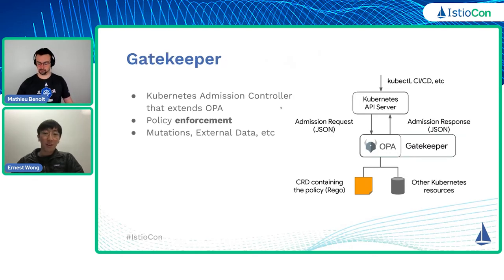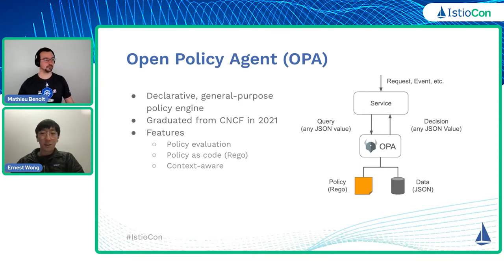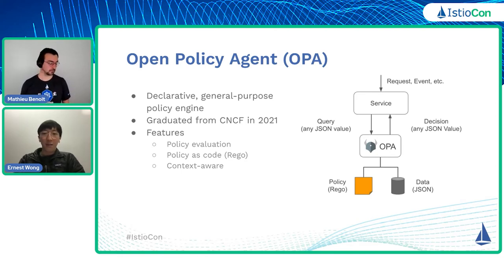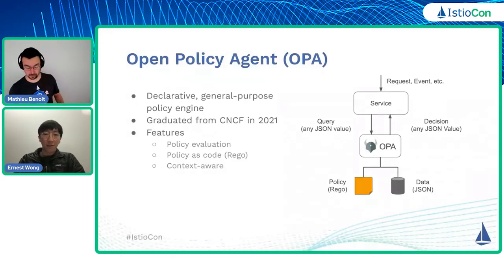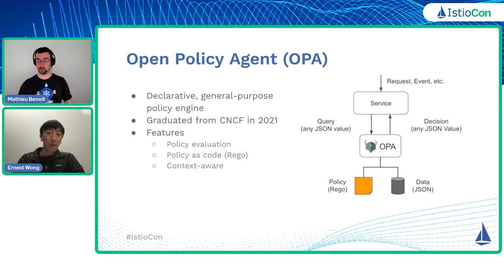Open Policy Agent, or OPA, is a declarative general purpose policy engine where services can offload their policy decisions. With OPA, instead of embedding policies within individual microservices, developers can write standalone policies and let OPA make policy decisions. The project graduated from CNCF in 2021, so it's part of the cloud-native ecosystem. It is battle-tested by companies like Google and Microsoft. OPA provides a well-defined policy language called Rego, which allows system administrators and developers to make visible incremental changes to your organization's policies. It is also context-aware, meaning it will work in any environment from the cloud to on-premise, bare-metal servers, or even your local environment.